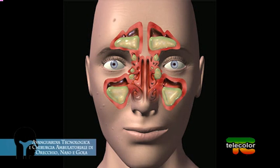Cosa determina un cattivo smaltimento? Le patologie ostruttive a carico delle fosse nasali: l'ipertrofia dei turbinati inferiori, la cosiddetta rinite vasomotoria, le deviazioni del setto nasale, i polipi nasali, le adenoidi nel bambino, e tutte quelle patologie infiammatorie di natura allergica che interessano le mucose delle fosse nasali e dei seni paranasali.